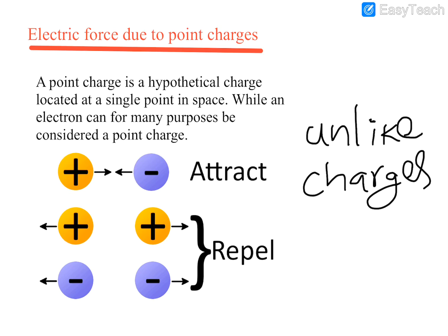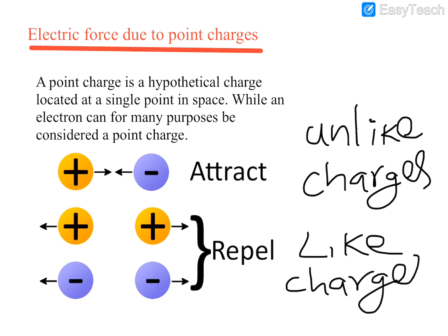In the next figure, you can see two similar types of charges: positive and positive, as well as negative and negative. When there are similar types of charges, they are called like charges. In the case of like charges, there will be a repulsive force. This positive will move away from this positive, as shown by the arrows pointing away from each other.